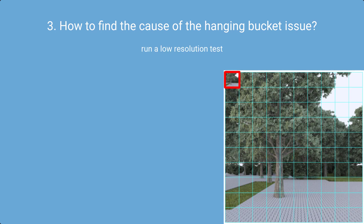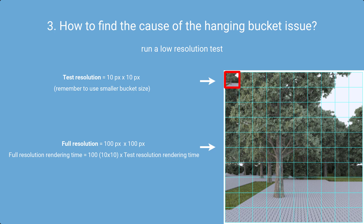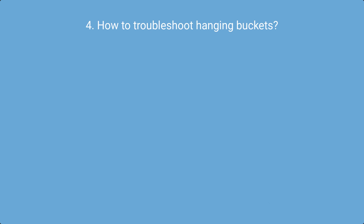A very helpful diagnostic is to run a test at a much smaller resolution — for example, one-tenth of the original. The full-resolution scene renders 100 times longer than the one-tenth resolution test, so every minute at one-tenth equals about 1 hour 40 minutes at full resolution. If the one-tenth test renders in 15 minutes, the full scene will take around 25 hours. If buckets are stuck for longer than 15 minutes at one-tenth resolution, something is seriously wrong and the scene probably won't finish at all.